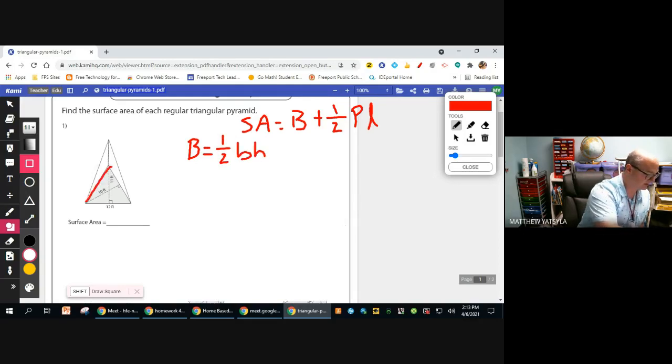So again, our base is here. We have a base and a height for this. So this is going to be one-half times 12 times 10, which is going to be 60 square feet.